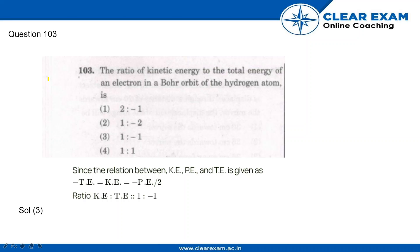NEET 2018 Set JG, question number 103: the ratio of kinetic energy to the total energy of an electron in a Bohr orbit of the hydrogen atom is — (1) 1/2 to -1/2, (2) 1 to -2/3, (3) 1 to -1, or (4) 1 to 1.